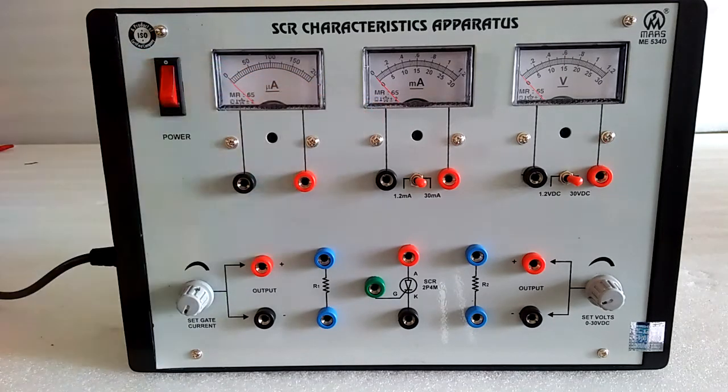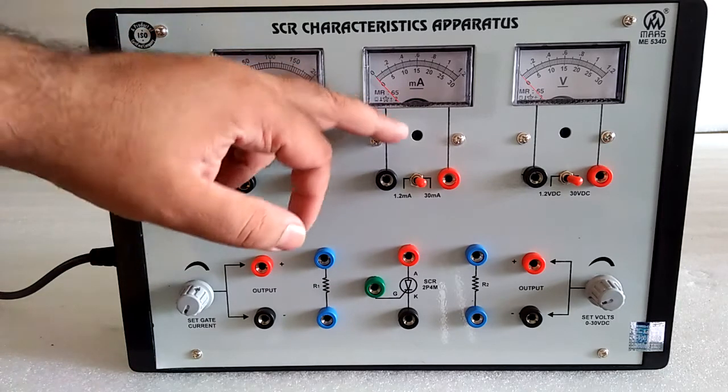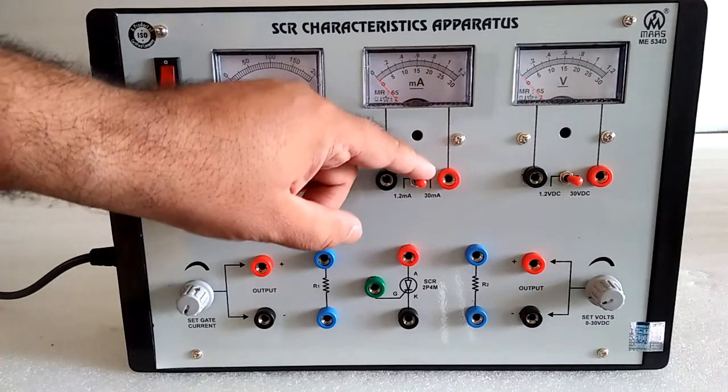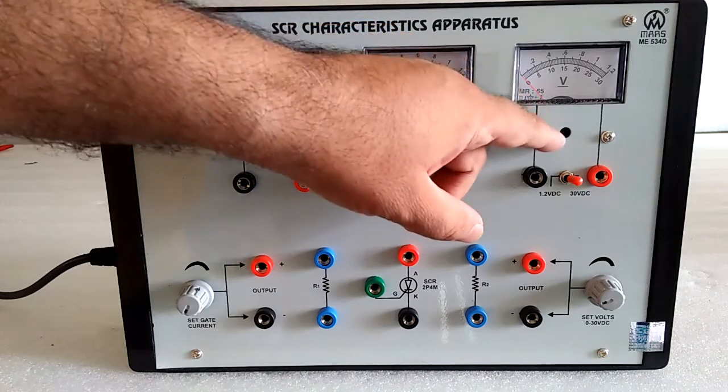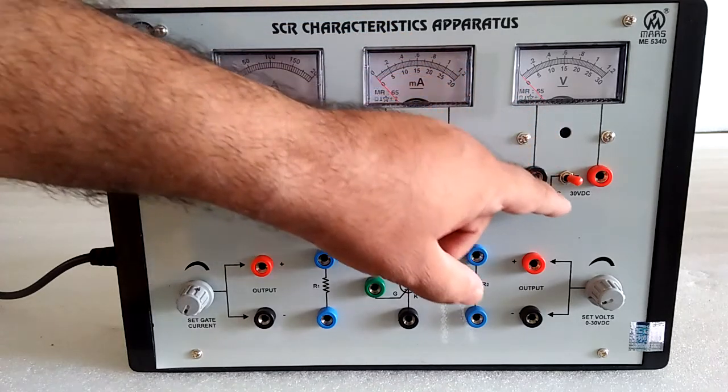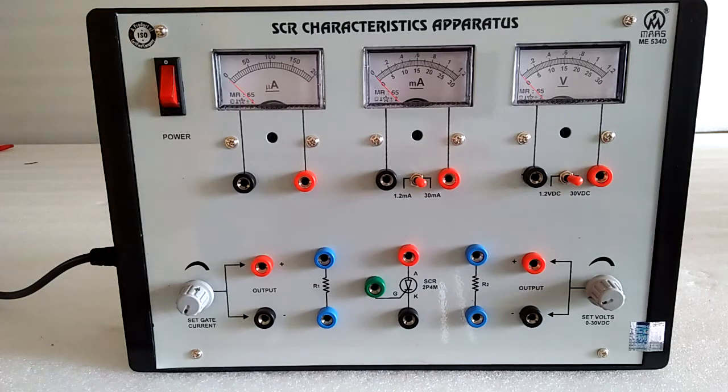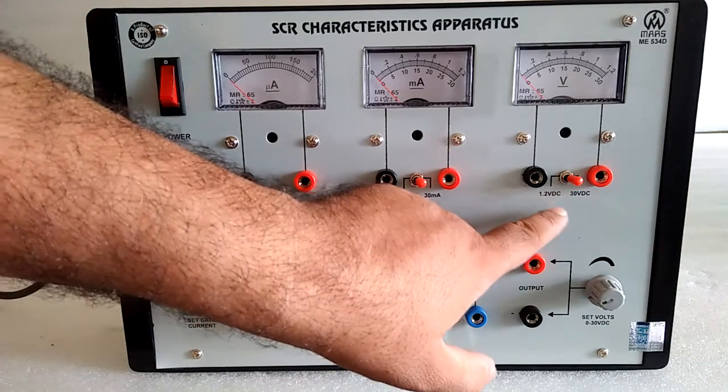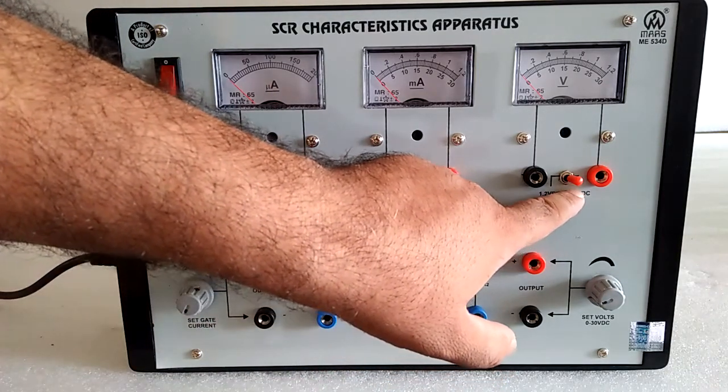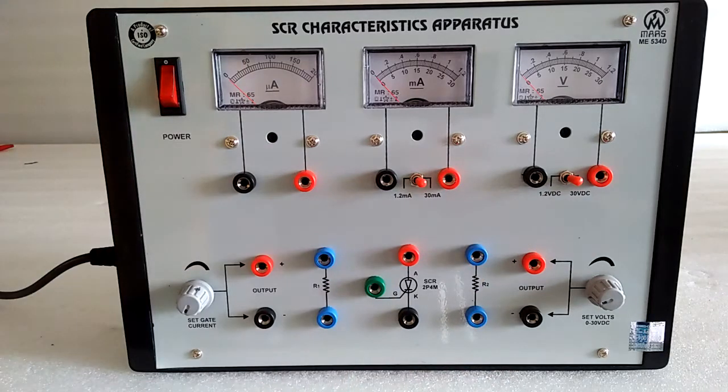Here is the dual range current meter 1.25 milliampere and 30 milliampere. Here to see the voltage, this volt meter also in dual range 1.2 volt and 30 volt. This will work for better reading for the characteristics.